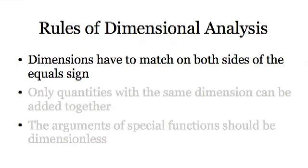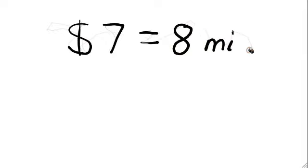Any sensible equation will follow certain rules of dimensional analysis. It's important to verify that your own work follows these rules to avoid making certain mistakes. For example, would you ever write the equation 7 dollars equals 8 miles? That's completely ridiculous and obviously wrong.